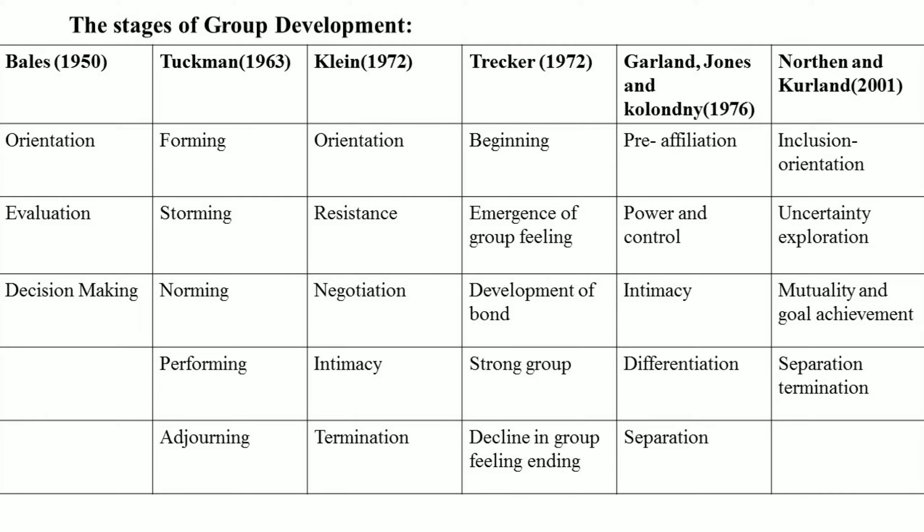The first theorist is Bales, who proposed stages of group development in 1950: orientation, evaluation, and decision making. Moving on to Tuckman in 1963, he developed stages starting from forming, storming, norming, performing, and adjourning. This is the most widely accepted model and frequently appears in UGC NET examinations.